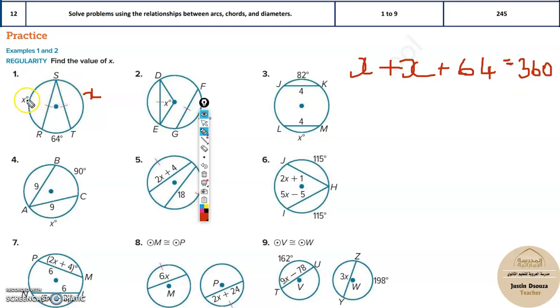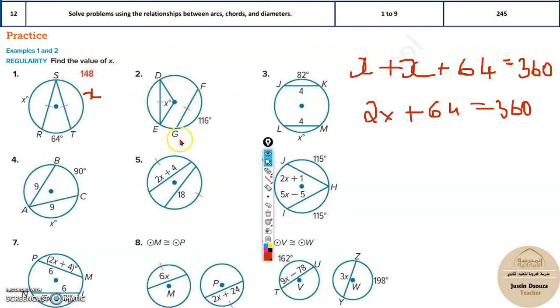These two chords tell us this and this are equal. Now you can easily solve it up. 2x plus 64 equals 360, and you can take this to the other side and solve it, or directly in the calculator. Anyhow, it's possible. So you will get the answer 148. Over here it was 116.